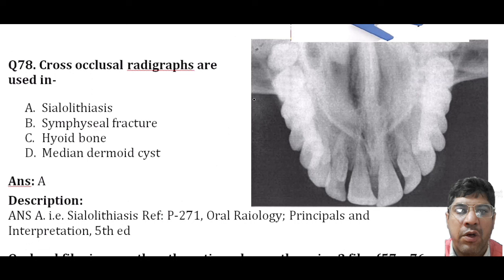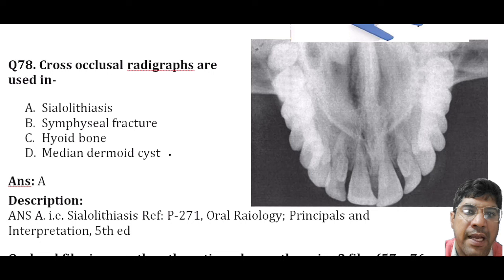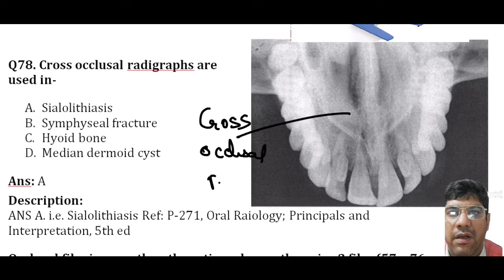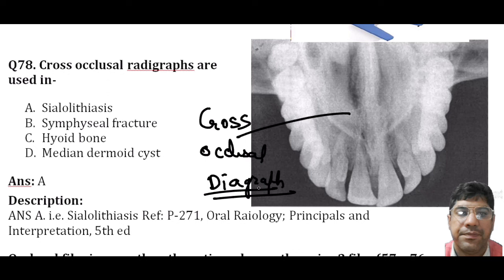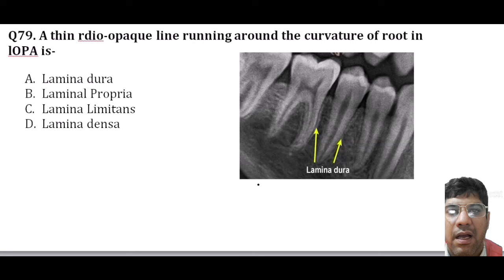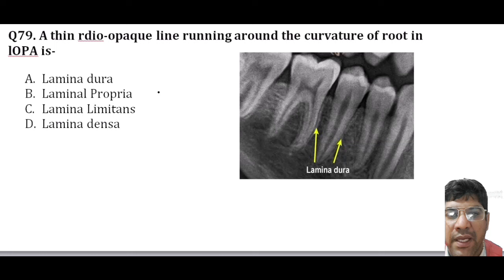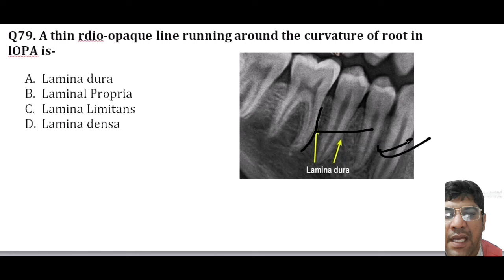Cross-occlusal radiographs are used to visualize and diagnose salivary gland stones or calculi in the ducts. A thin radio-opaque line running around the curvature of the root in an IOPA is the lamina dura — a dense compact layer of bone that lines the tooth socket. It is an important diagnostic feature in assessing the health of the supporting bone and the presence of any pathology around the tooth.